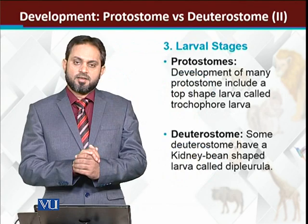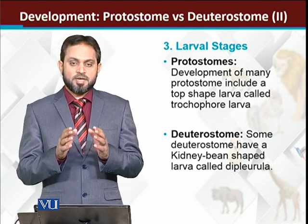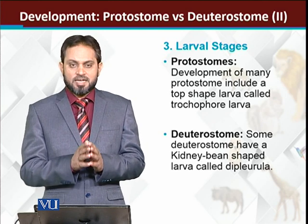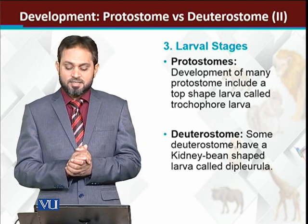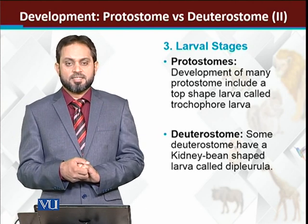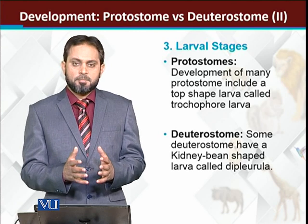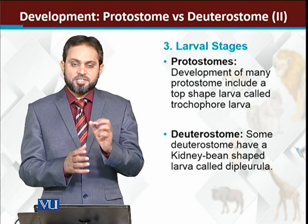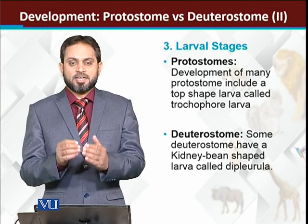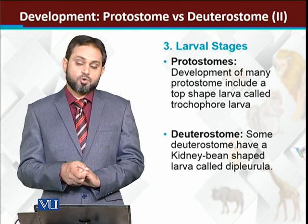Larval stages — many phyla of the animal kingdom have larvae. Many protostomes have larvae, and this larva has a specific name called the trochophore larva. In deuterostomes, not all have a larval stage, but when it is present, it has a specific kidney shape and is called the dipleurula larva.